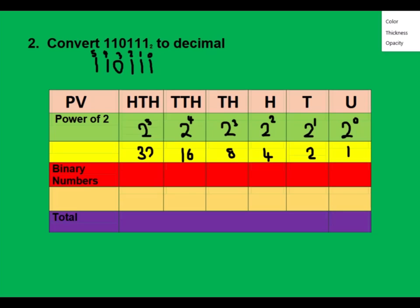The next thing is to write the binary numbers in the table. We have one, one, zero, one, one, and one. Now multiply them: one times 32 gives 32. One times 16 gives 16. Zero times eight gives zero. One times four gives four. One times two gives two. One times one gives one.